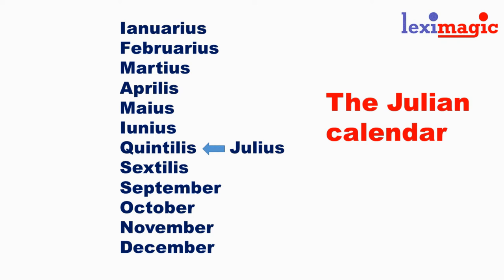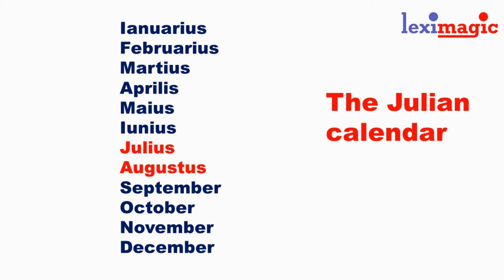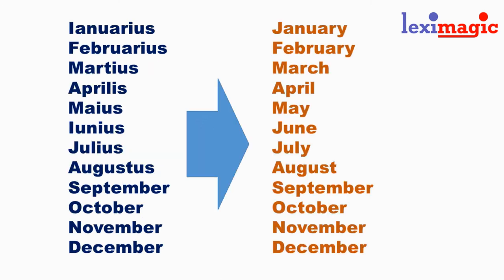After that, the Roman Senate voted to name the month Sextilis after Augustus Caesar, and it came to be named August. With some minor changes, those are the names of the months of the Gregorian calendar used in the English-speaking world, as you know today.